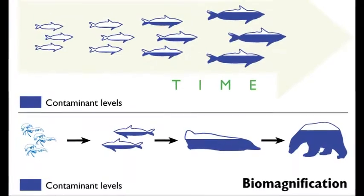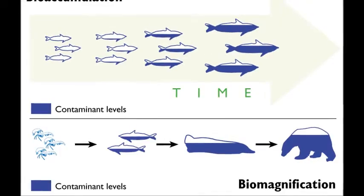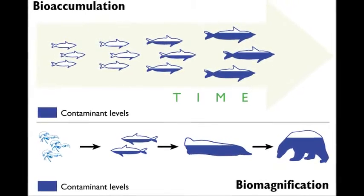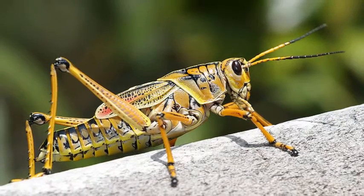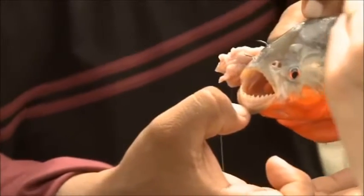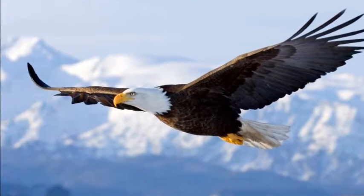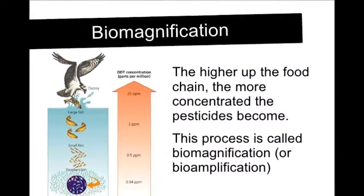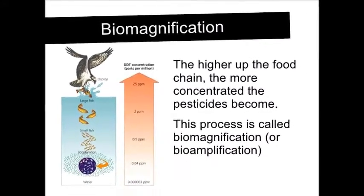Biomagnification is the increase in concentration of a toxic substance in the food chain as well as other organisms in the ecosystem. Its process is if a grasshopper eats a plant infected with pesticides, then a fish eats that grasshopper, then an eagle eats that fish. Biomagnification means that the eagle will suffer a greater dose of pesticides than the grasshopper did.